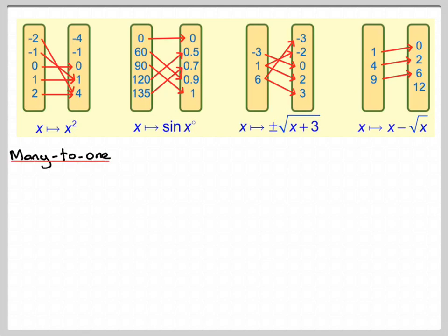So this is called a many-to-one. If we take a look, minus 2 and 2 both map onto one thing. It only has to happen once for it to be called many-to-one. In this case, it actually happens twice.